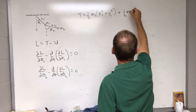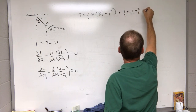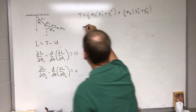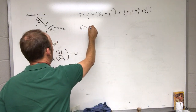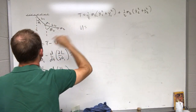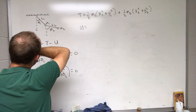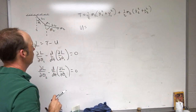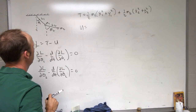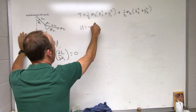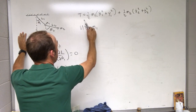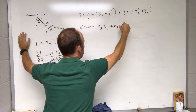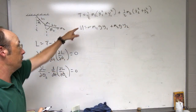The total kinetic energy is one-half m1 (x1_dot² + y1_dot²) plus one-half m2 (x2_dot² + y2_dot²). For the potential energy, setting y equals zero at the top, I get U equals m1·g·y1 plus m2·g·y2. That one's easy.